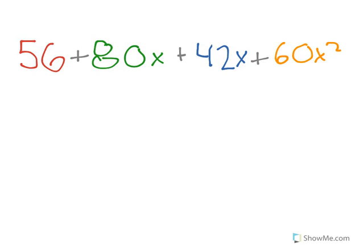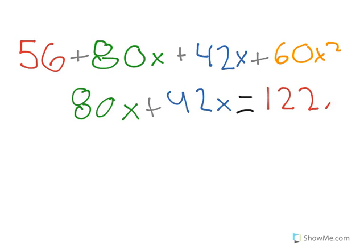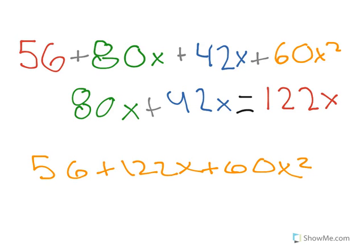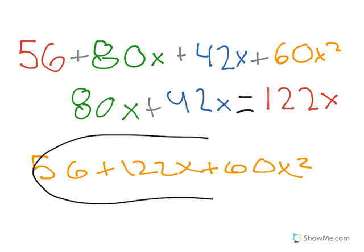Then you'd add together the like variables. So that would be 80x plus 42x, which equals 122x. You then insert that back into your original equation, and you get 56 plus 122x plus 60x squared. And that is your simplified equation.